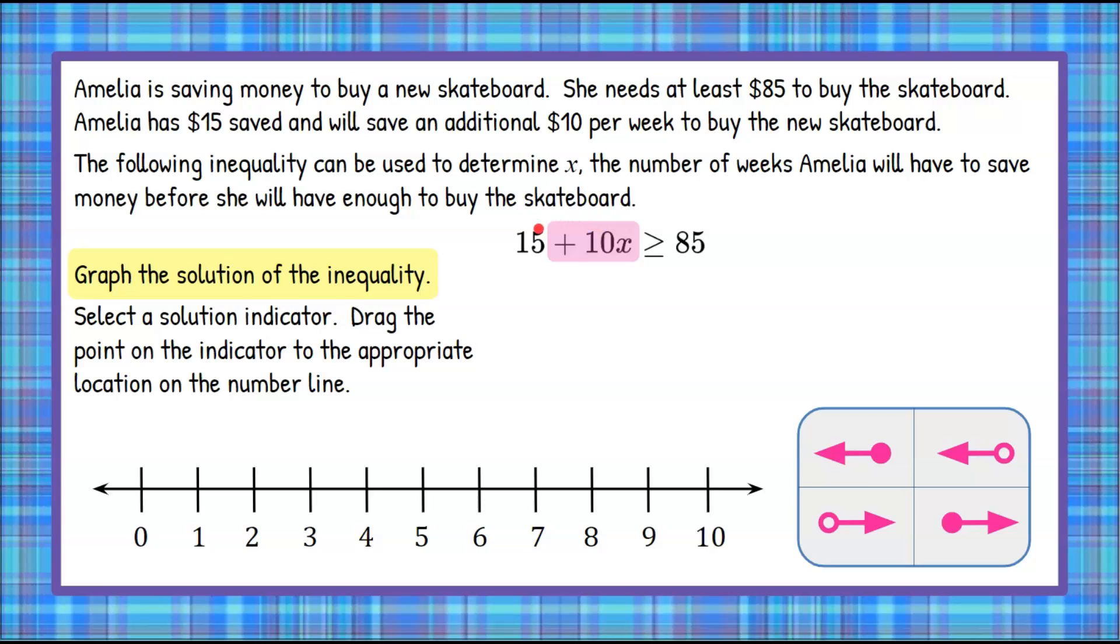We have to undo this positive 15 here. There's no sign in front of it, so we know it's a positive 15, and the inverse of positive 15 is negative 15. What I do to one side of the inequality, I must do to the other side. So we are going to subtract 15 from each side of this inequality. 15 - 15 is 0, and we bring down our positive 10x, which is 10x, bring down our inequality symbol, and 85 - 15 is 70.